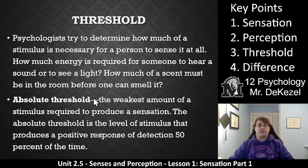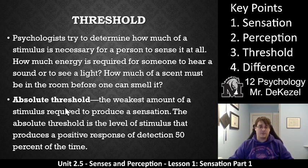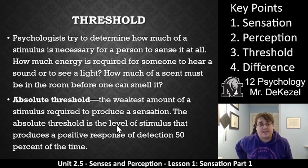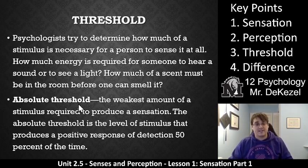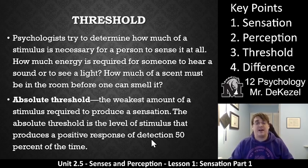Key point three: threshold. Psychologists have tried to determine how much of a stimulus is necessary for a person to sense it at all — if you're in a perfectly black room, how much light is necessary to see it? How much energy is required to hear a sound or see a light? How much scent has to be in a room before you can smell it? That is a threshold. An absolute threshold is the weakest amount of a stimulus required to produce a sensation. They've tested this — the level used is that it produces a positive response 50% of the time. Half the time that stimulus is presented, someone will say yes, I detected it; the other half of the time they will not. That is the absolute threshold.